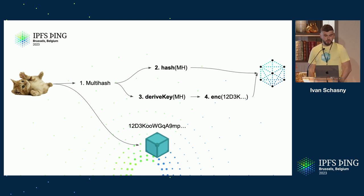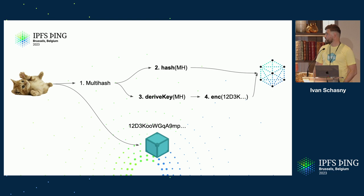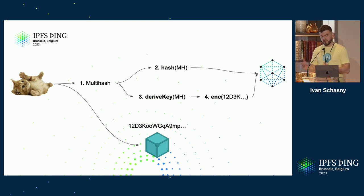For our cat picture example, to make data discoverable, you pin it on an IPFS node and make the routing system aware of its location. You get the CID of the content and its multihash. Then you do two things: you calculate a hash over the multihash — that's where the name 'double hashing' comes from, since the multihash is already a hash over the content. At the same time, you derive a cryptographic key from that multihash, take the identity of the provider that has that content, and encrypt the identity with the key derived from the original multihash. You then put the pair — the hashed multihash and the encrypted payload — into IPNI.